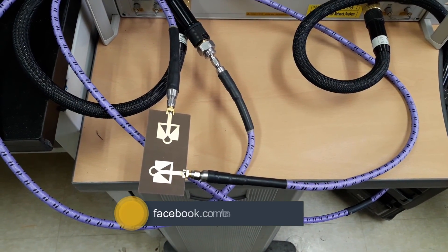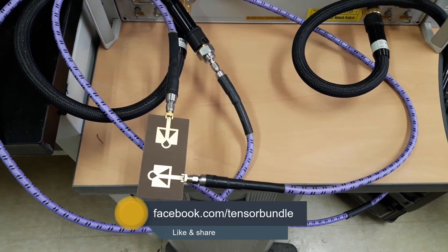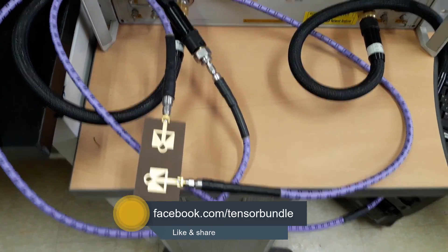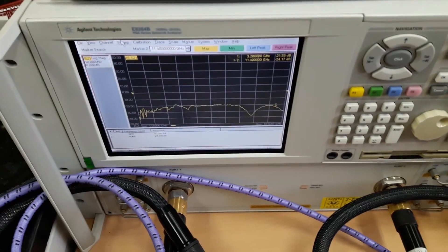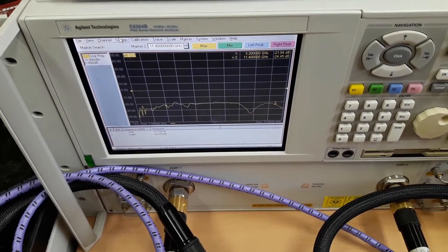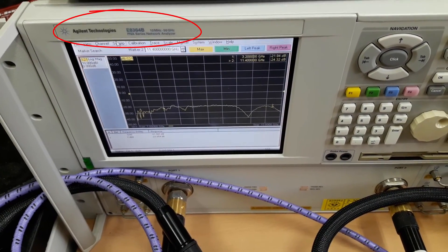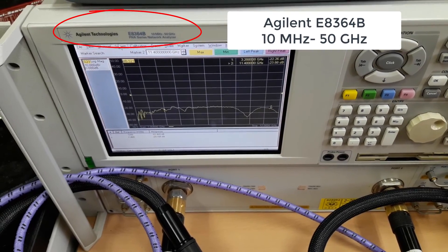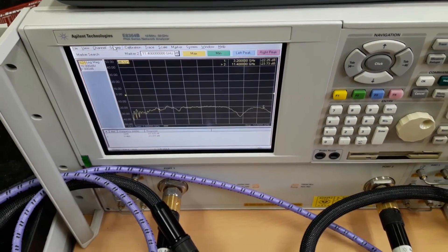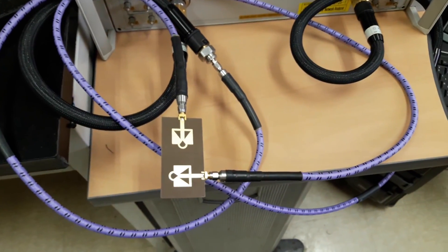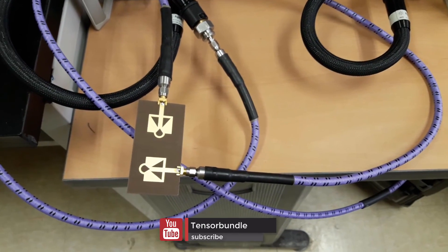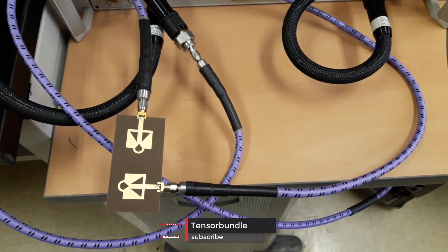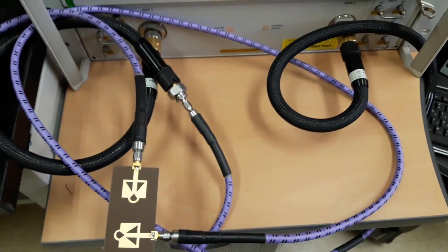Using a couple of coaxial cables, I've connected this 2x2 MIMO antenna with this vector network analyzer. It's manufactured by Agilent Technologies. The model number is E8364B which supports up to 50 GHz of measurement.